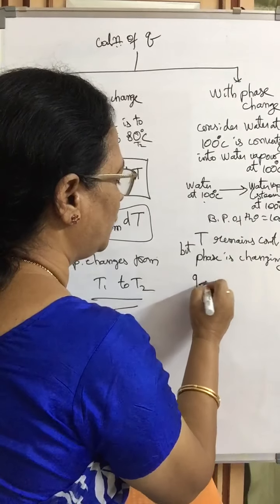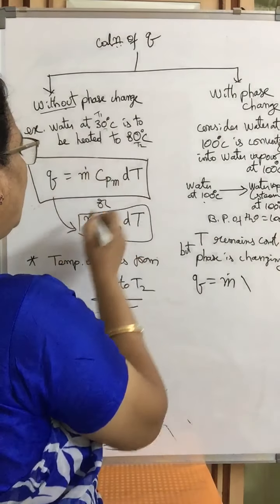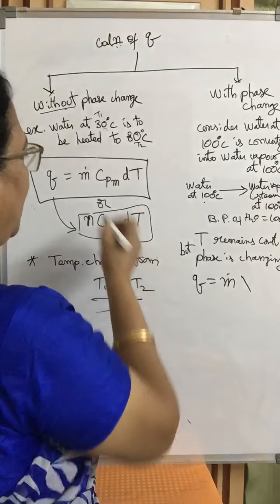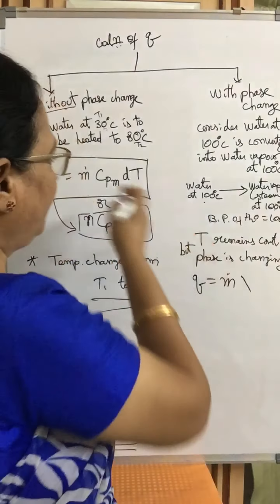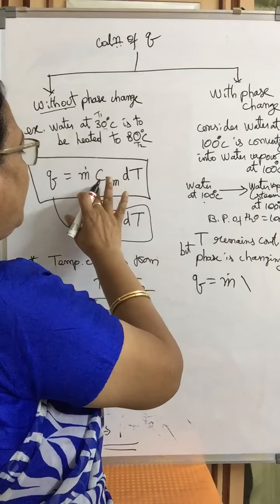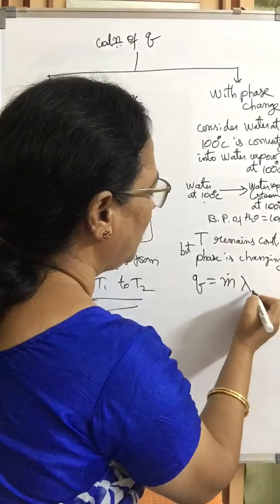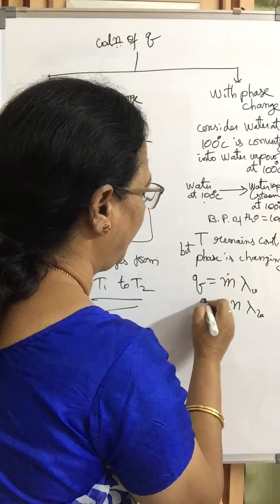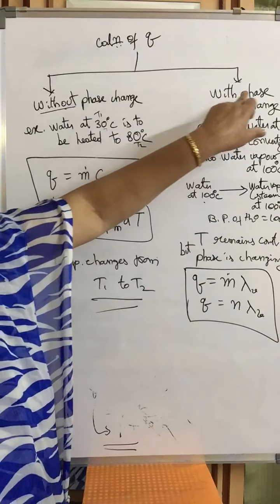In this type of case with phase change, Q is calculated as Q = M-dot · λV, or Q = N · λV, depending on the units. Here M-dot means mass flow rate — if it is per hour, M-dot is used; if it is just mass, M is used. λV is the latent heat of vaporization. Its units can be kilocalories per kg or kilocalories per kilo-mole.